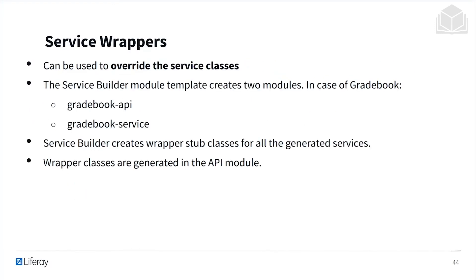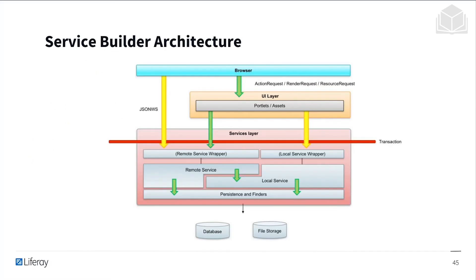We also have service wrappers, and these can be used to override the service classes. The service builder module template creates two modules. In the case of our gradebook, we will have the gradebook API and the gradebook service. Service Builder creates wrapper stub classes for all the generated services, and the wrapper classes are generated in the API module.